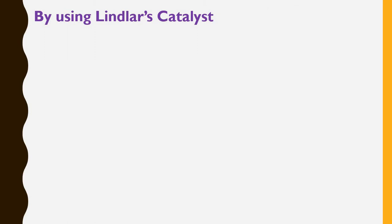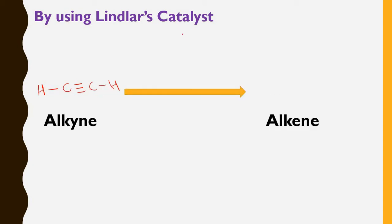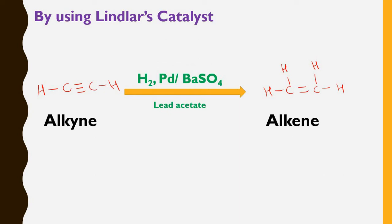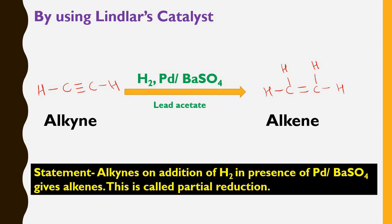So there are two reactions we are going to see. The first one is by using Lindlar's catalyst. The alkyne, meaning a compound which contains a carbon-carbon triple bond, is converted into an alkene — that is, a compound containing a carbon-carbon double bond — by addition of hydrogen across the triple bond. For this purpose we use hydrogen in the presence of palladium and BaSO4; lead acetate can also be used. This is the statement of the reaction: alkynes on addition of hydrogen in presence of palladium/BaSO4 gives alkenes.